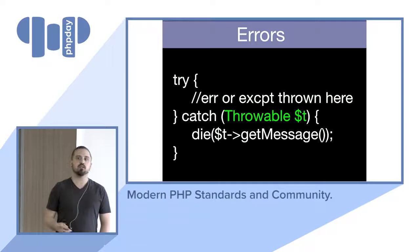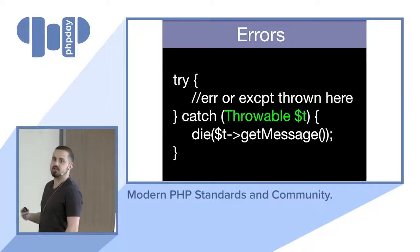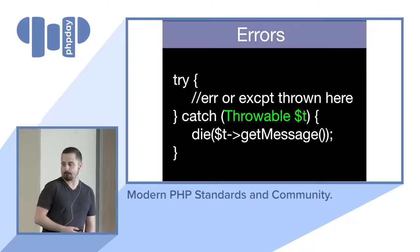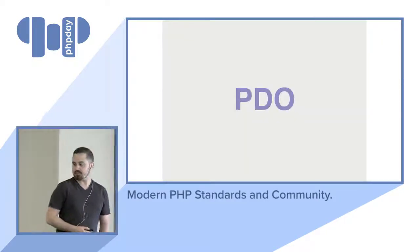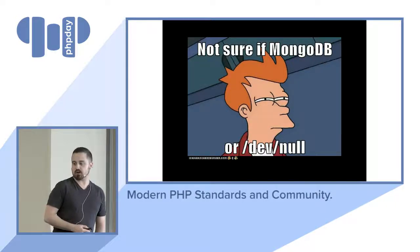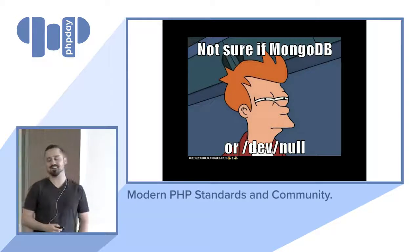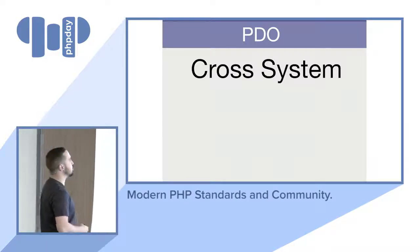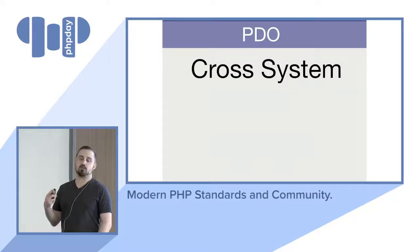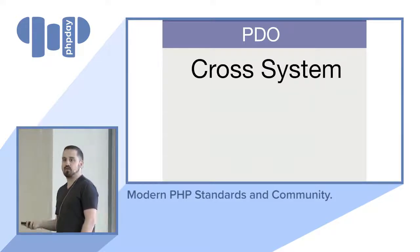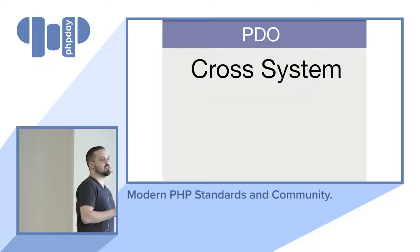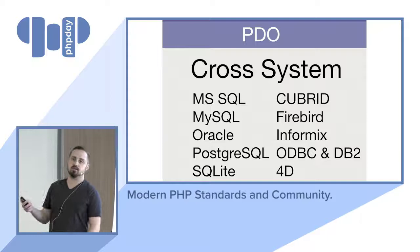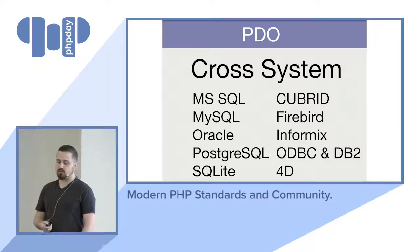If you want to catch everything, Throwable in PHP 7 is a great way to do that, since both Error and Exception extend it. Now, PDO. PDO is a cross-system way of handling your databases — it abstracts away your database interactions. If you've used MySQLi or MySQL or the Postgres extensions for PHP, it's basically the same thing, but it gives you a standard abstraction so you can interact with many different databases through the same API, making it easier to be cross-system.